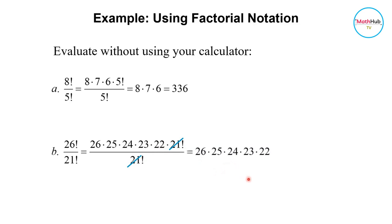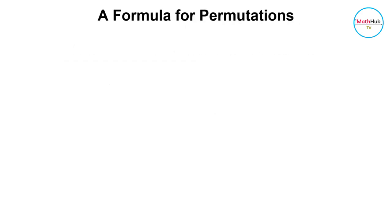So canceling this will give us 26 times 25 times 24 times 23 times 22 and that is equal to 7,893,600.